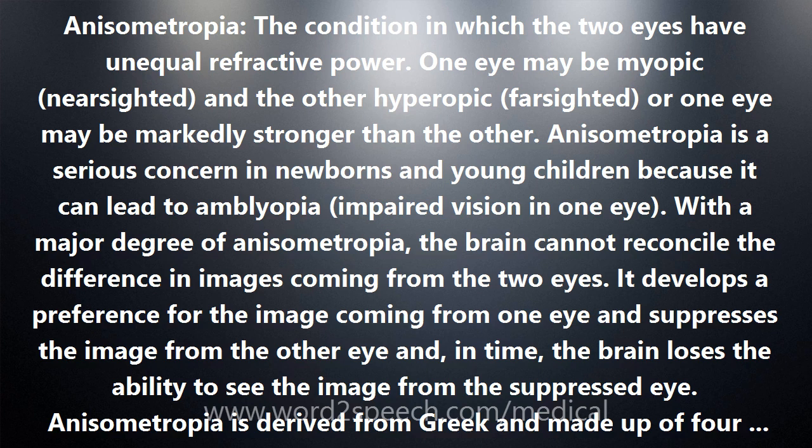Anisometropia is derived from Greek and made up of four parts: an, iso, metr, and opia. Their meaning is simple — an (not) + iso (equal) + metr (measure) + opia (vision). Literally: the measure of vision is not equal; the refractive power of the two eyes is different.